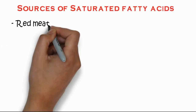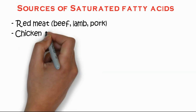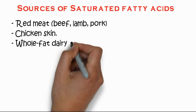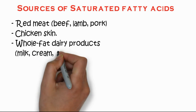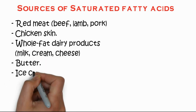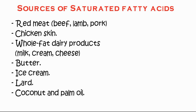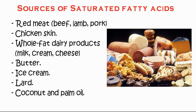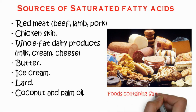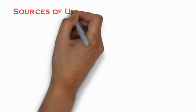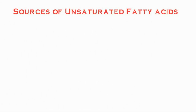Sources of saturated fatty acids include red meat such as beef, lamb, and pork, chicken skin, whole fat dairy products like milk, cream, cheese, butter, and ice cream, as well as lard, coconut, and palm oil. You can see some food products which contain saturated fatty acids.